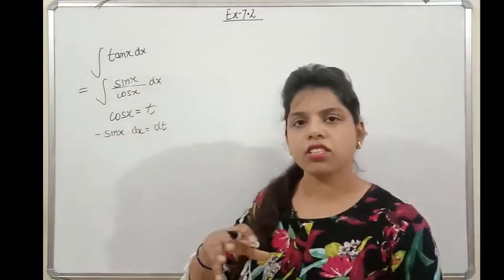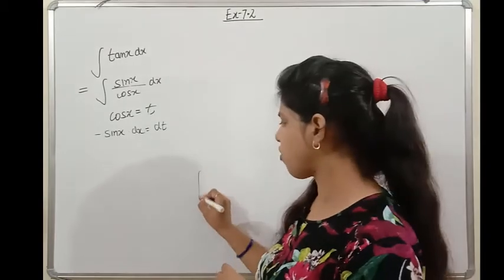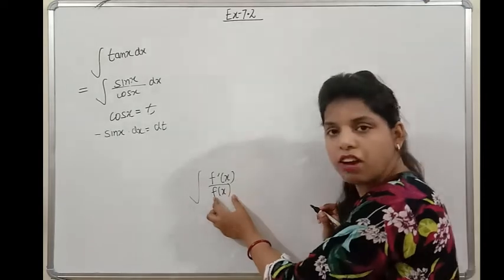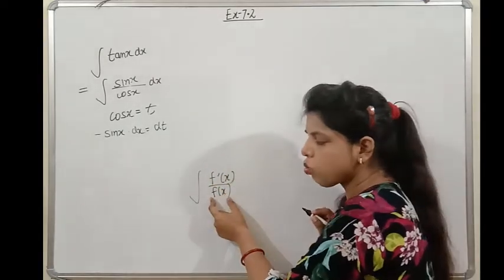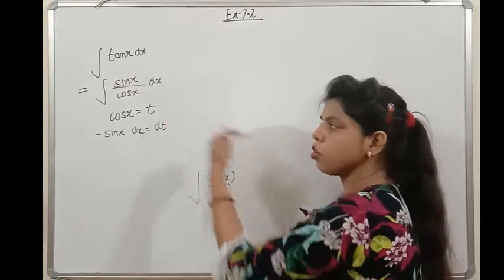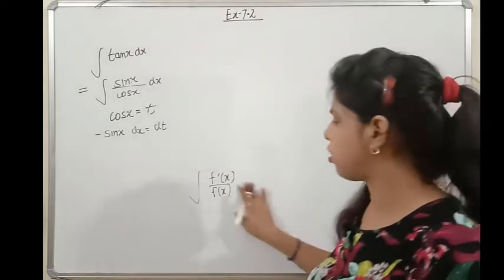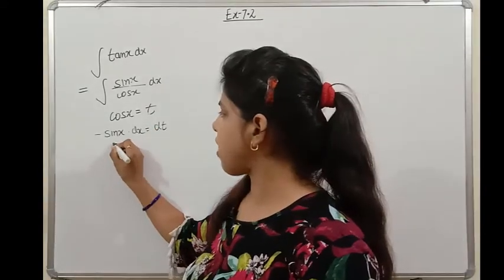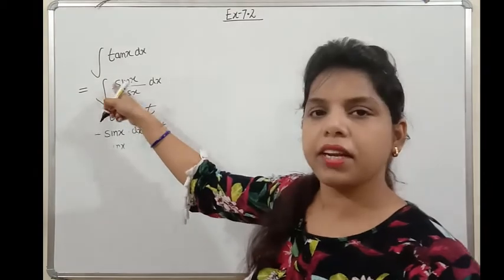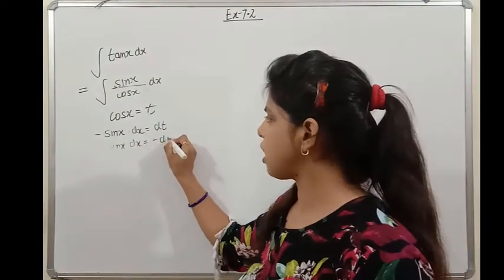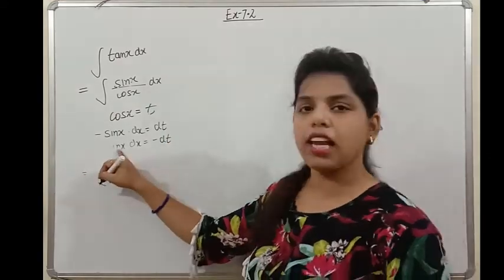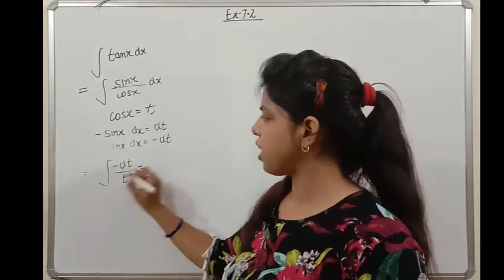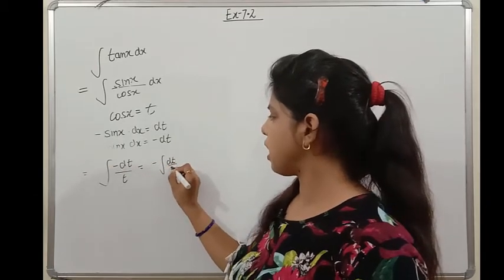Notice that sin x appears in the numerator. Whenever the function is in the form f'(x)/f(x), always follow this method. From the differentiation, sin x dx = −dt. Substituting, sin x dx = −dt and cos x = t, so the integral becomes −∫dt/t. The negative can be taken outside, giving −∫(1/t)dt.